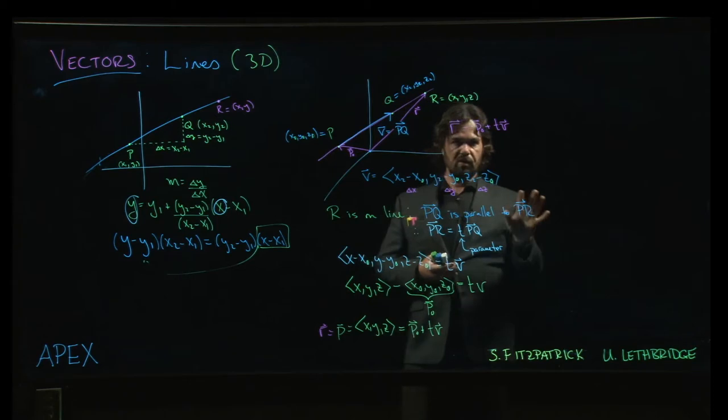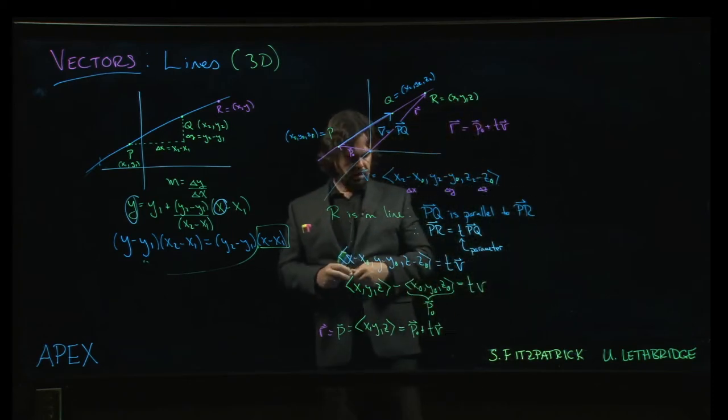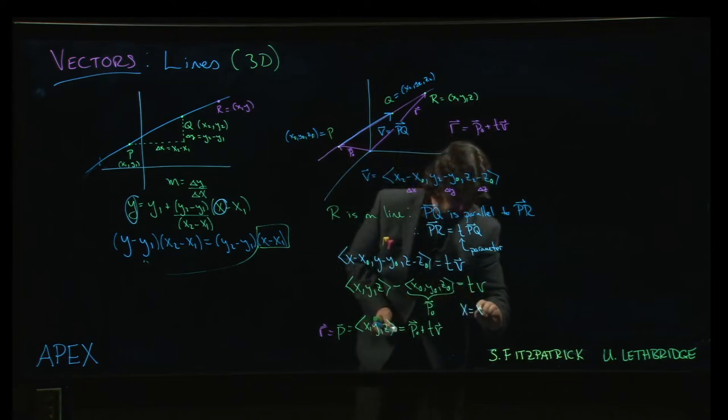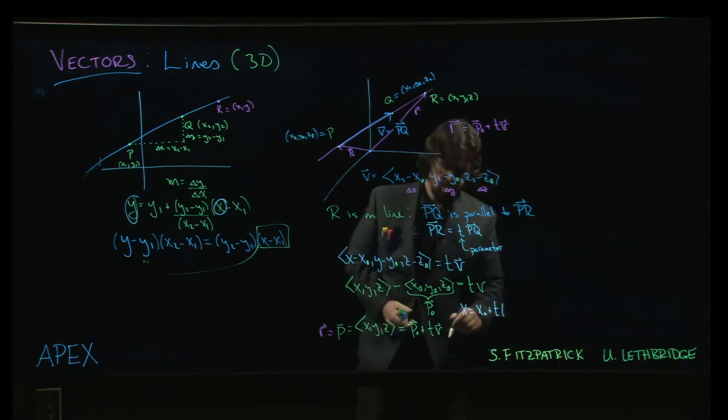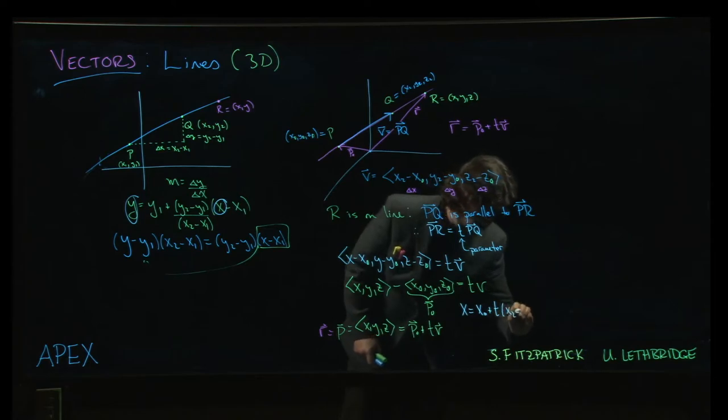And there we go. So that's our equation for a line in three dimensions. There are a number of other ways that you will see this written out. If you kind of put everything in component form, you'll often see this written as like, you know, x is equal to, say, x0 plus t times, well, I guess x2 minus x0, the way we've written it here.